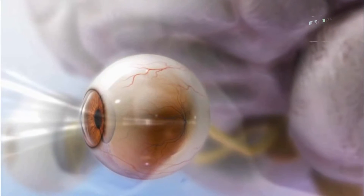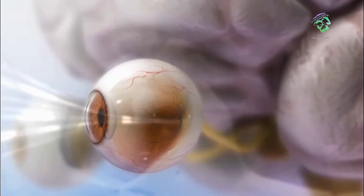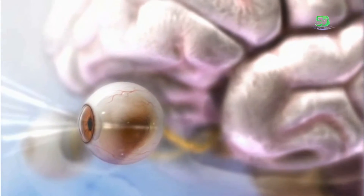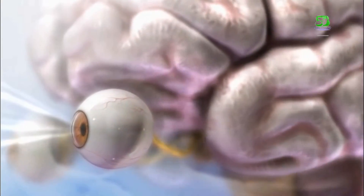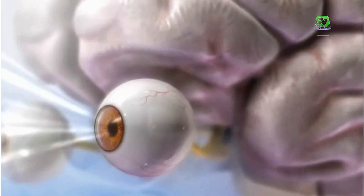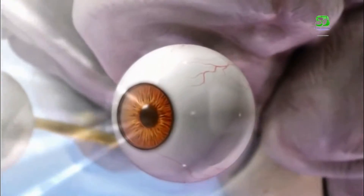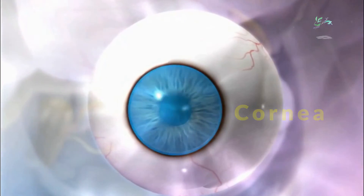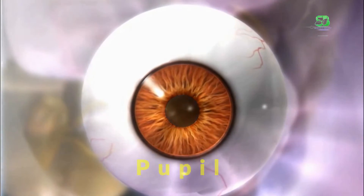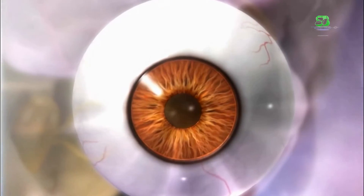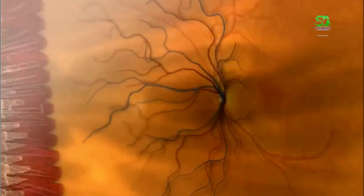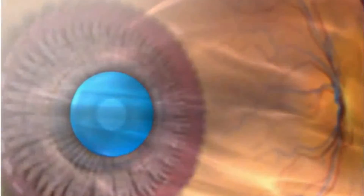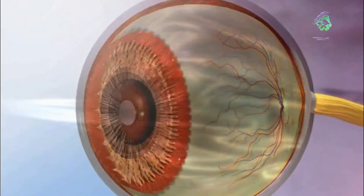Brightness and distinct color are first interpreted by structures in the back of the eye, and then a stimulus signal is sent to the brain, which interprets it as vision. On the exterior of the eye is an area called the cornea, which includes the pupil — a hole through which light enters the eye. Inside the eye, light is refracted by a lens and focused onto the retina.